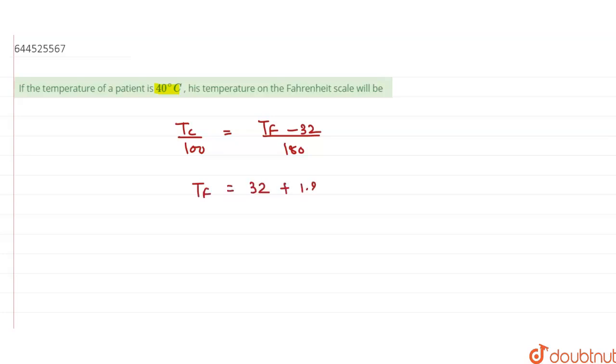Putting this value, I will have TF equals 32 plus 1.8 times 40. Simplifying this, I will have TF equals